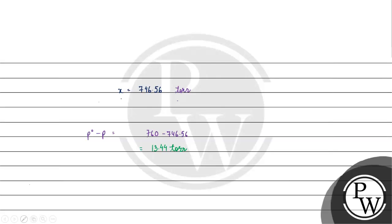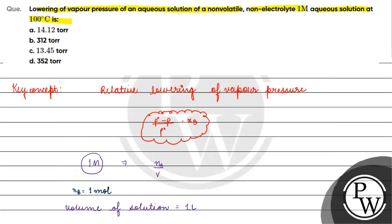Now, P0 minus P equals 760 minus 746.56 torr, which gives us 13.44 torr. Coming back to the question, the correct answer is Option C. I hope you understood it well — thank you and all the best.